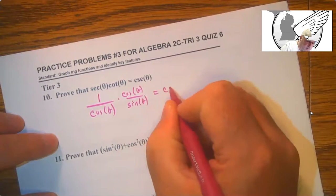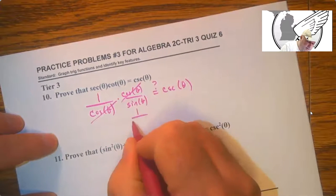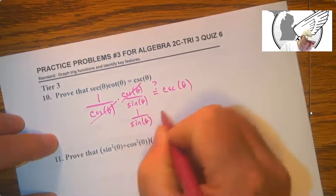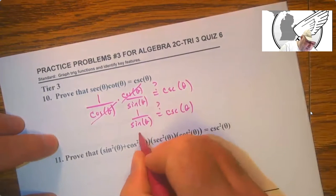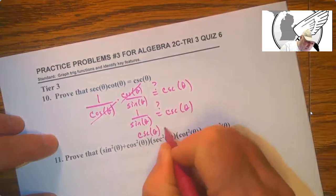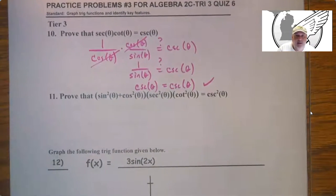Does this equal cosecant? So we have 1 over sine. Does that equal cosecant? It does.